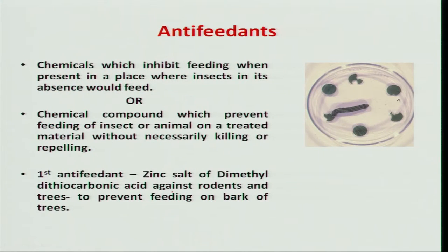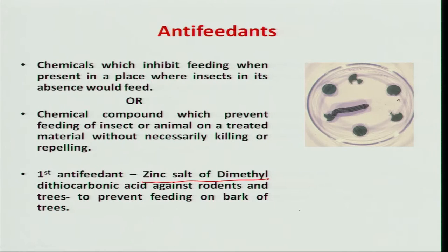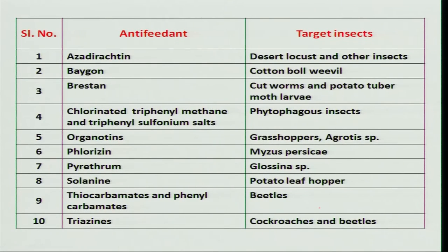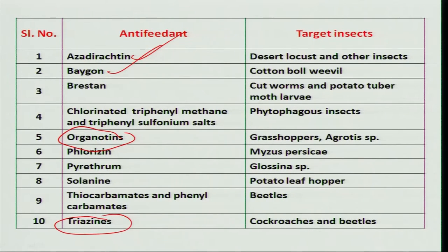Similar to attractants, we have antifeedants. An antifeedant means the treated surface is avoided by the insect from feeding — the insect can sit on the treated surface but cannot feed. The first chemical released was zinc salt of dimethyldithiocarbamic acid, used against rodents feeding on tree bark. Various antifeedants are available from botanical sources, chemical sources, and some belong to groups like argotines and triazines.